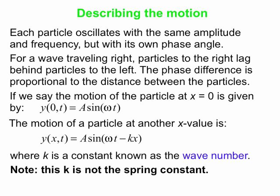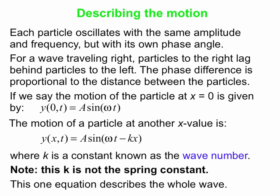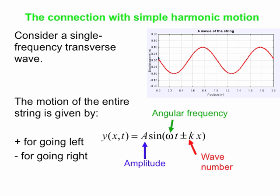Please note that we've used k before with simple harmonic motion and we called it the spring constant. This is not the same thing. Even though we're talking about simple harmonic motion, this k is a different thing. So this one equation, y as a function of x and t equals A sin(ωt - kx), that actually is a single equation describing the whole wave, the whole oscillating string.